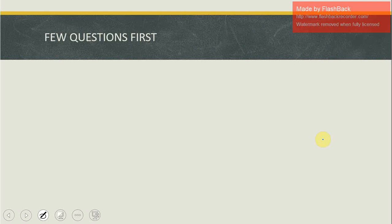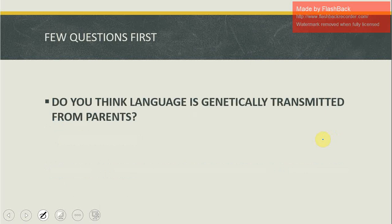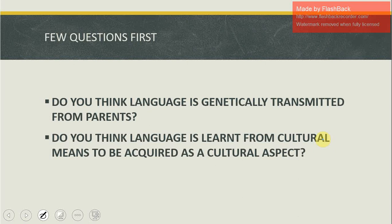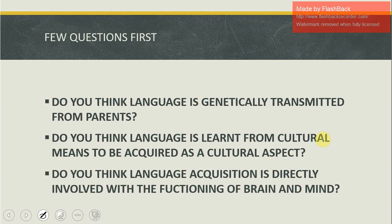Before studying these theories, you should have a few questions in mind. Do you think language is genetically transmitted from parents — gifted through your genes? Like animals, they have language in their genes; a cat knows how to meow because it has been gifted with that ability. Or do you think language is learned through culture? Or is language acquisition directly involved with the function of the brain and mind?